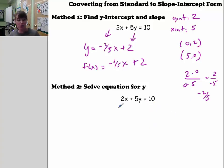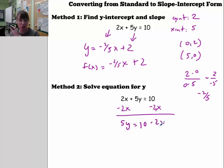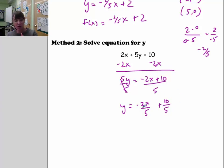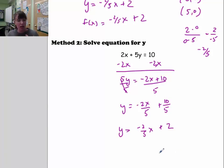Method 2: solve for y algebraically. Subtract 2x from both sides to get 5y = negative 2x + 10. Since we want the coefficient of y to be 1, divide both sides by 5. When dividing an expression on the right by 5, divide each term separately: negative 2x over 5 becomes negative (2/5)x, and 10 over 5 becomes 2. So y = negative (2/5)x + 2 — the same result. If asked for f(x) notation, just replace y with f(x) in the last step. And that's the end of the lesson.